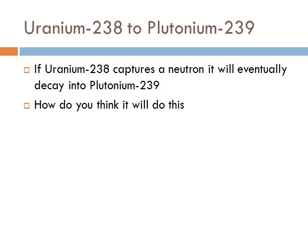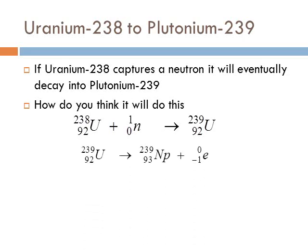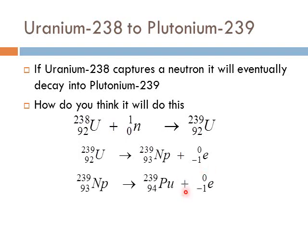You should know this reaction. First, uranium-238 undergoes an induced nuclear reaction: we shoot a neutron at it, forcing it to become uranium-239. Then it naturally undergoes beta decay to neptunium-239. After that, another beta decay converts it into plutonium-239.